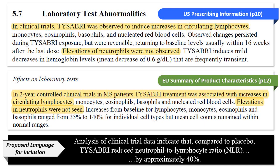What's interesting is that this section is titled 'Laboratory Test Abnormalities' — so it's already framed as an anomaly or essentially an adverse event. That's kind of the obstacle I've encountered: when you bring up these cell types and the changes happening in people on Tysabri, the mind immediately goes to a safety risk, which is understandable. The language, especially in the USPI, is trying to create a sense of comfort that the changes are reversible. The EU SPC notes that increases from baseline for lymphocytes, monocytes, eosinophils, and basophils range from 35% to 140% for individual cell types, but mean cell counts remain within normal ranges.